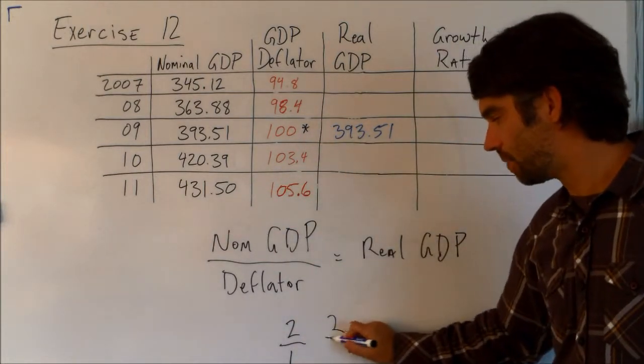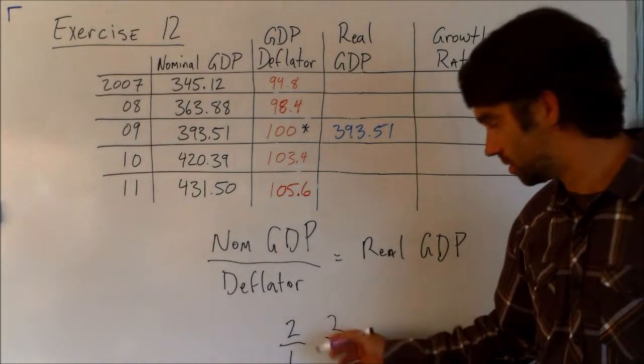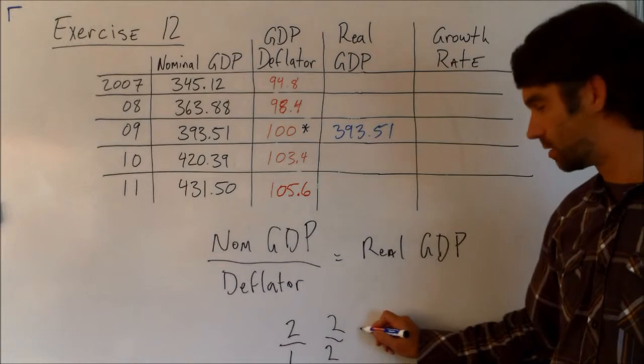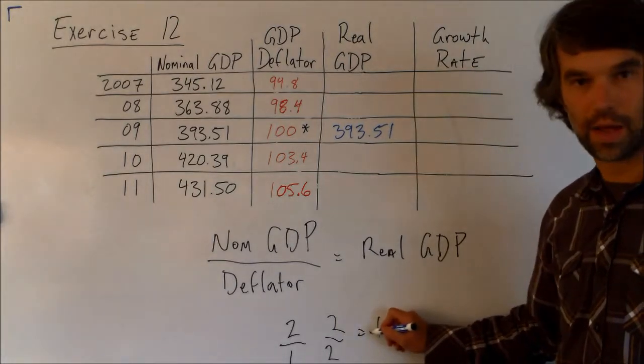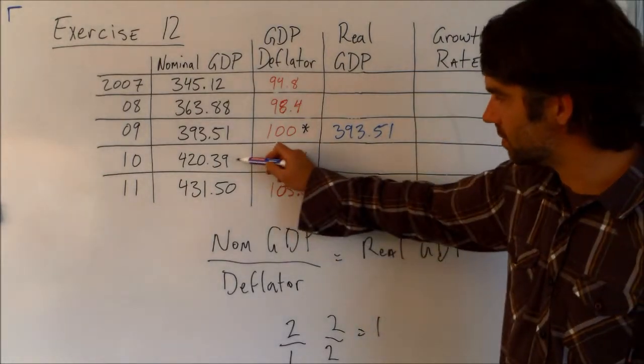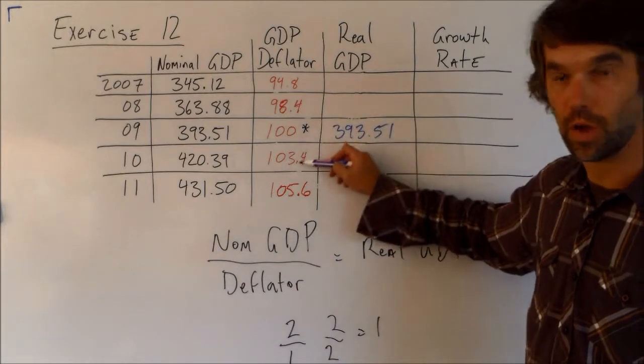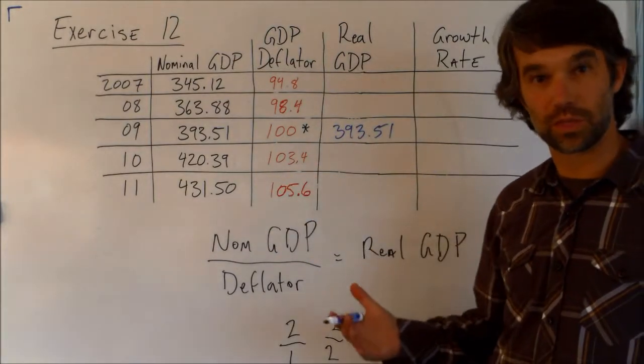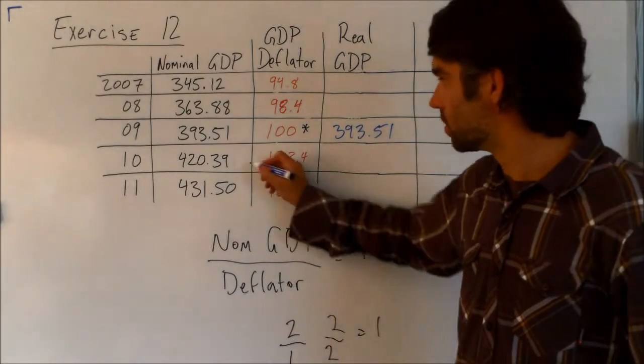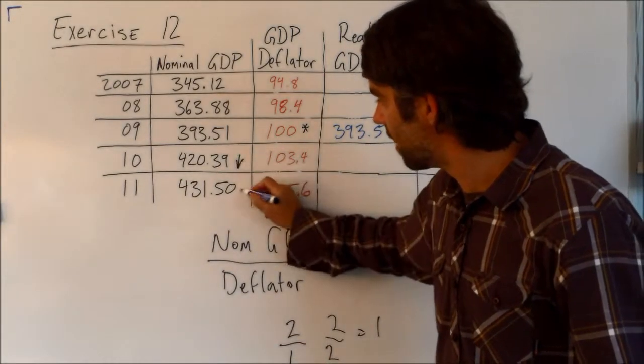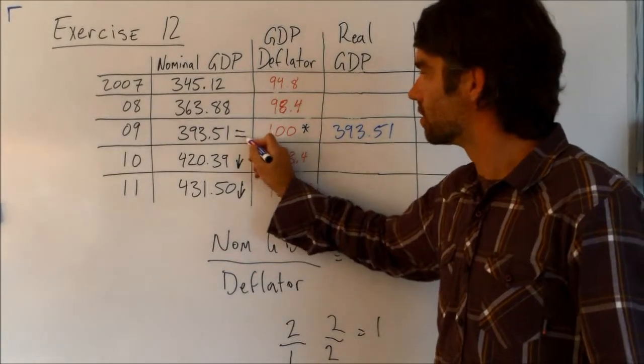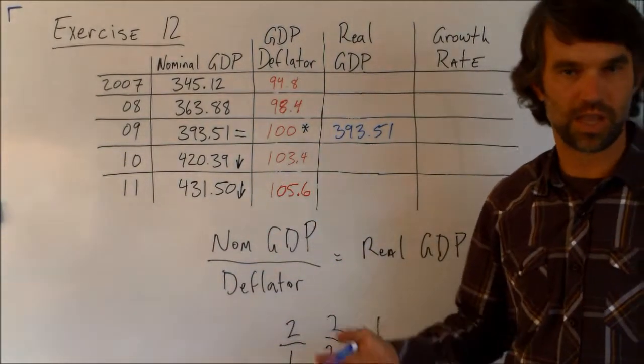Next, if I take two and divide it by a number that's greater than one, what happens to my original two? It gets smaller, it goes to one. So here, these numbers that are bigger than 100, we can predict that these two numbers are going to get smaller. And that's where the term deflator comes from. So this and that are both going to get smaller, while the first number is going to stay the same.